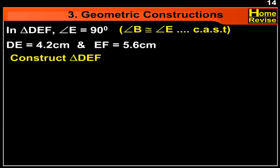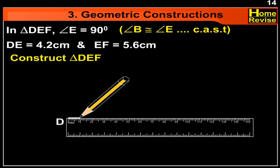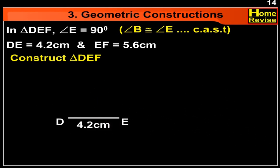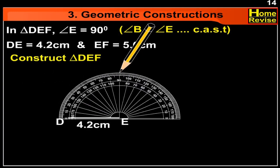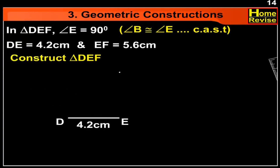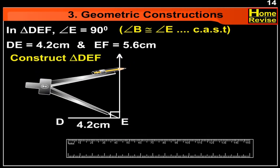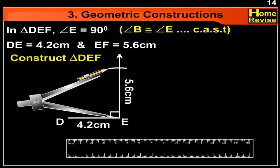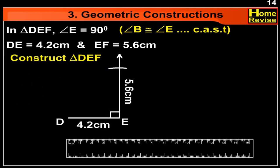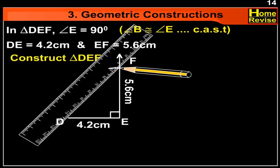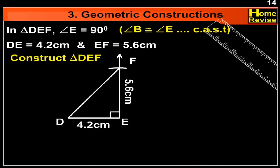To construct triangle DEF, first draw segment DE of 4.2 cm. Then draw 90 degrees from point E. Now take 5.6 cm measurement on a compass, put the compass on point E and make an arc on the perpendicular. This point of intersection is point F. Now join DF. Thus triangle DEF is constructed.